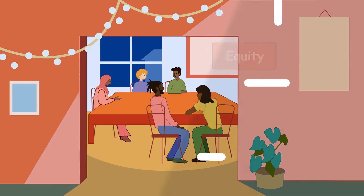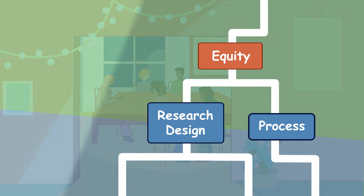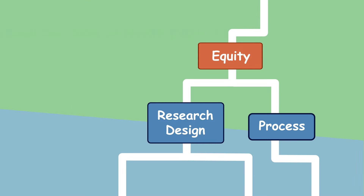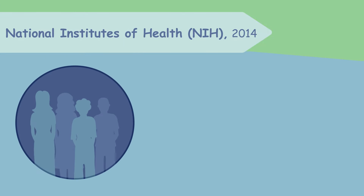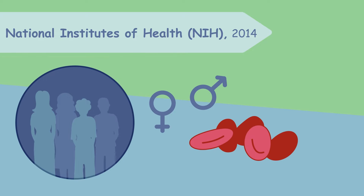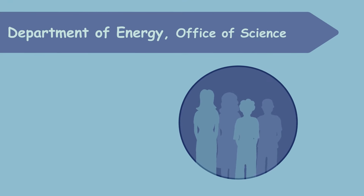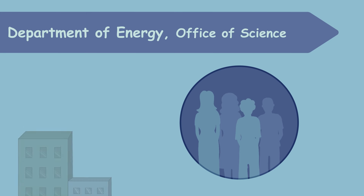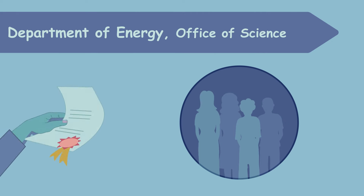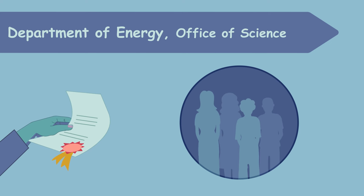It is also important to incorporate equity in research design and process. To prevent gender and sex disparities in biomedical research, as of 2014, the NIH required grant applications to report how their preclinical studies balanced the use of both male and female cells and animals. Additionally, the Department of Energy's Office of Science, the largest federal sponsor of basic research in the physical sciences, is requiring applicants to submit a plan for promoting inclusive and equitable research alongside their research proposals starting in fiscal year 2023.